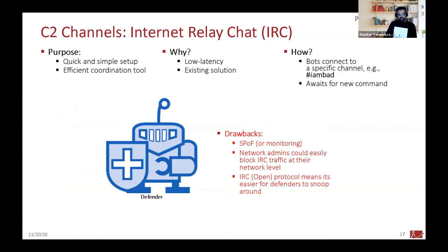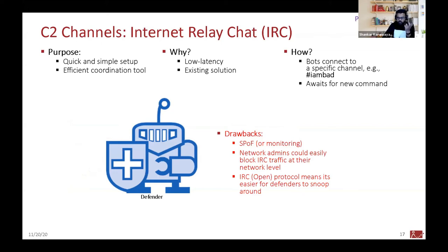The drawback of IRC servers is that it's a centralized architecture — a single point of failure or monitoring. Network administrators can easily block IRC traffic at the network level. In fact, most corporate organizations have a rule that IRC traffic is not allowed through their network. Additionally, IRC is a well-known protocol, which means defenders can easily parse the replies to understand how the botnet operates.